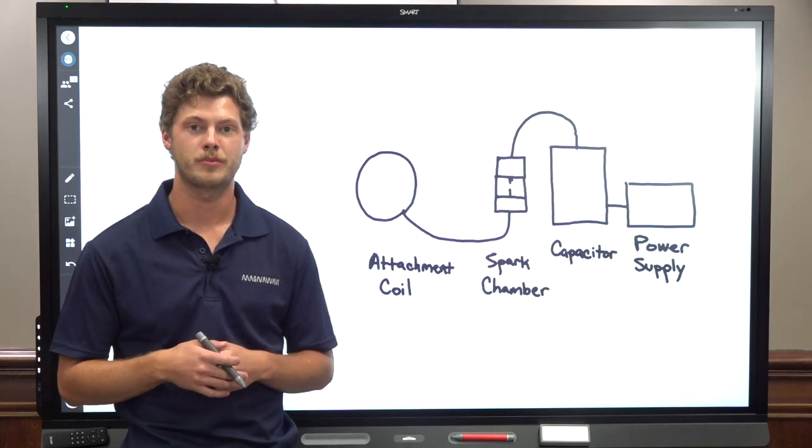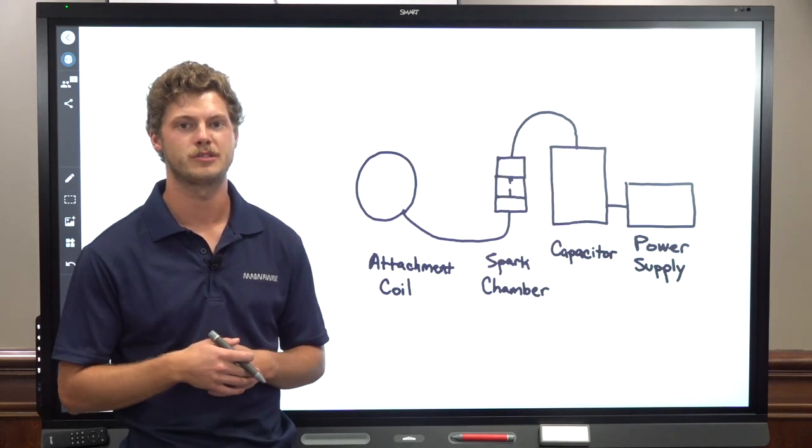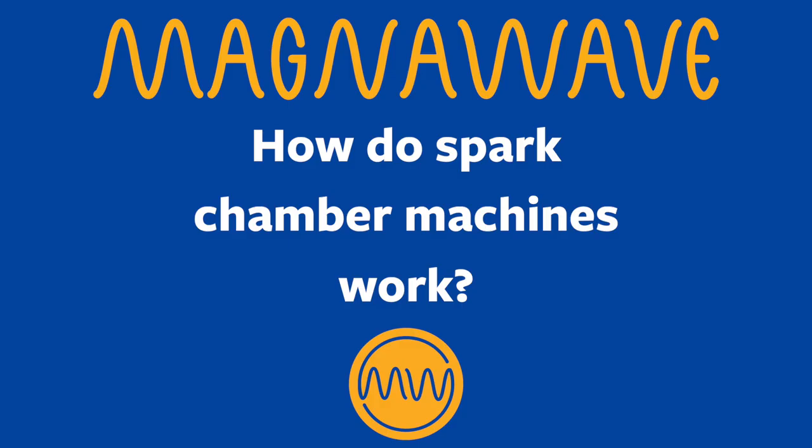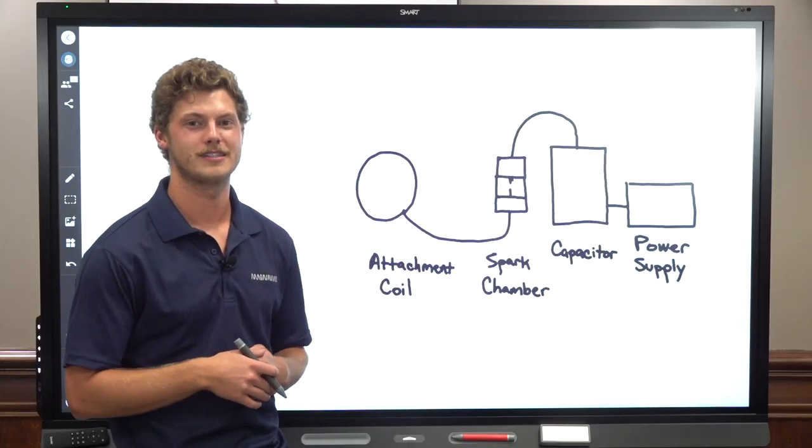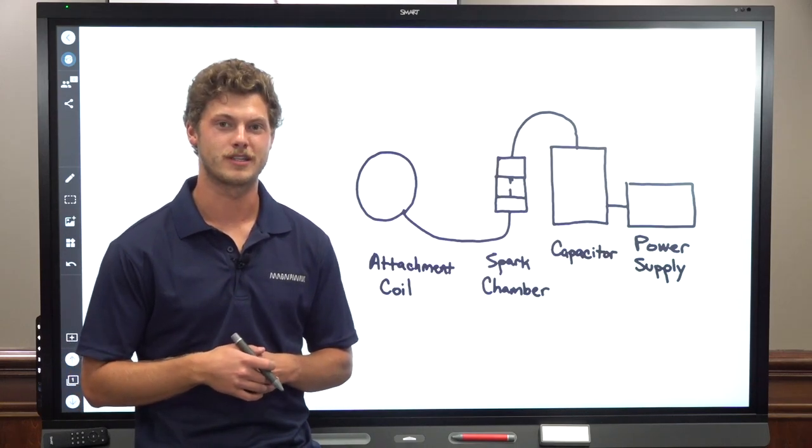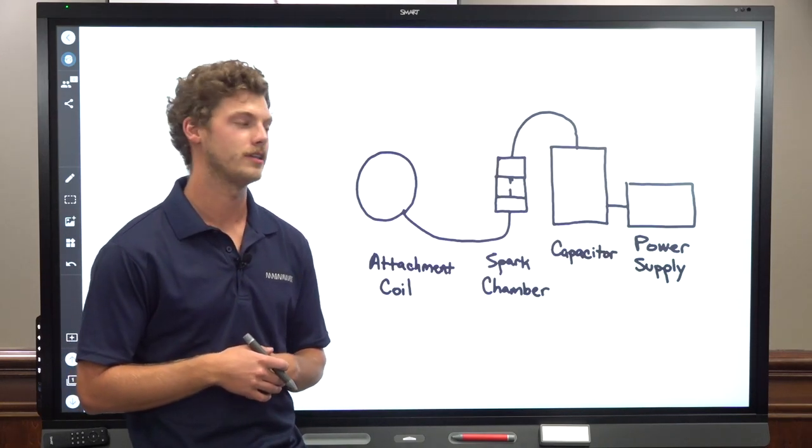So today I'm going to explain some of the basic operating principles and some of the differences between a spark chamber and digital PEMF machine. I'll start by explaining how a spark chamber machine works. It has four basic components in its operation: a power supply, a capacitor, a spark chamber with its electrodes inside, and a coil attachment.